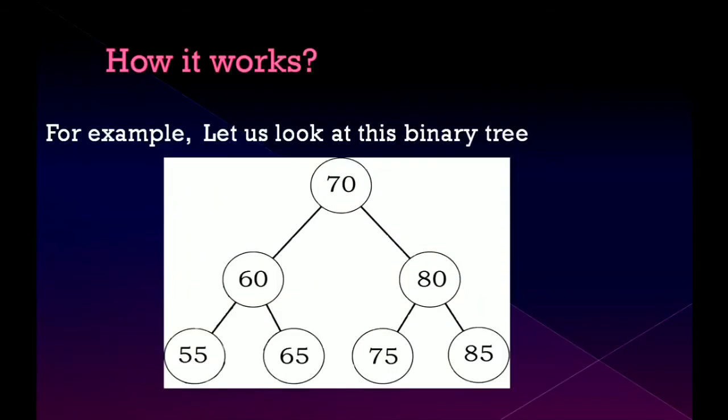We should know how the algorithm will work. Let us look at this binary tree where 70 is the base of the binary tree and the children of 70 are 60 and 80. 60 and 80 are also having children. 60 is having 55 and 65 as children and 80 is having 75 and 85 as children.